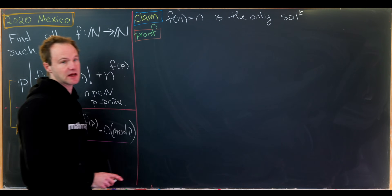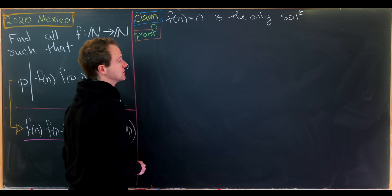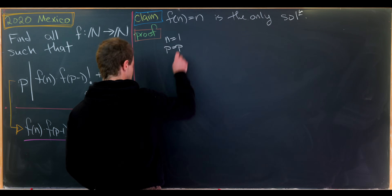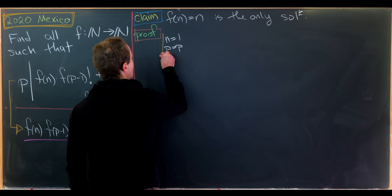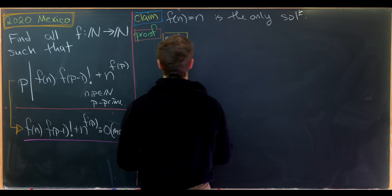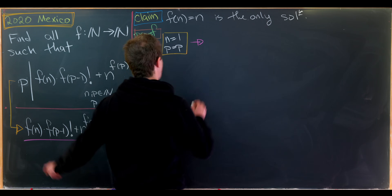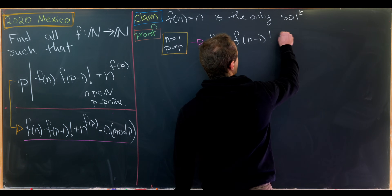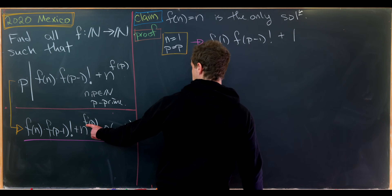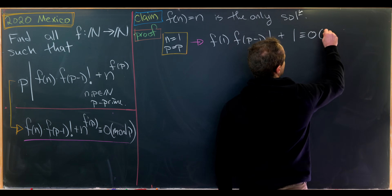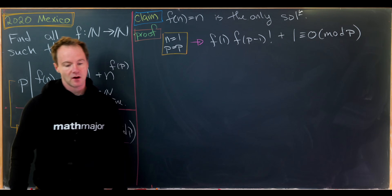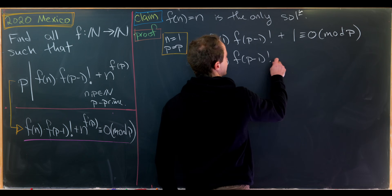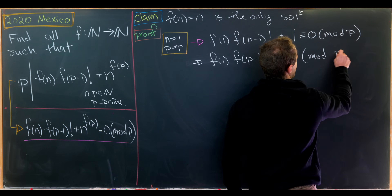Let's prove the claim that the identity is the only solution. Let's take n = 1 and p free to be any prime, and plug into our condition. We get f(1)·f(p-1)! + 1^f(p) ≡ 0 mod p. Since 1^f(p) = 1, this means f(1)·f(p-1)! ≡ -1 mod p.